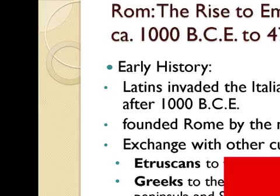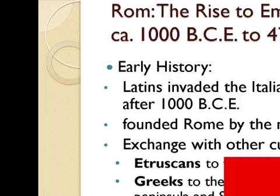Rome: The Rise to Empire, ca. 1000 BCE to 476 CE. Early history: Latins invaded the Italian peninsula just after 1000 BCE, founding Rome by the mid-800s. They exchanged culture with the Etruscans to the north, Greeks to the south with colonies at the tip of the peninsula and Sicily, and Phoenicians on the northern coast of Africa, Asia, and Minor.